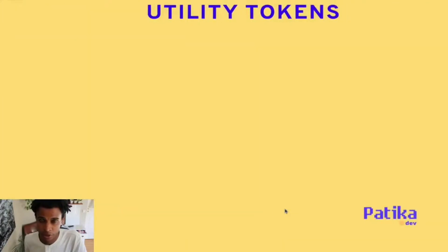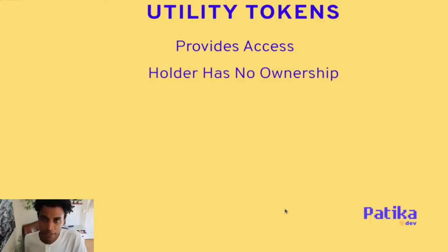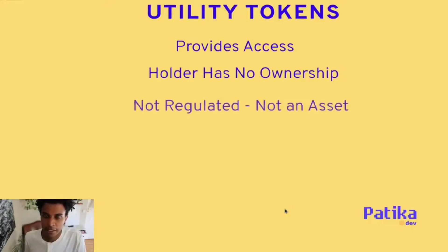Let's look at utility tokens first. Utility tokens normally provide access — either to a community, a service, or a different protocol and how to use it. The token only provides access; it doesn't actually provide ownership of the service, product, or protocol. Because of that, they're not regulated in the same ways by different governments, because it's not actually an asset.